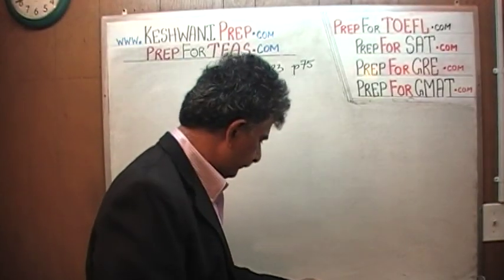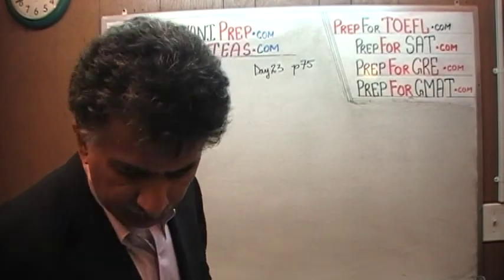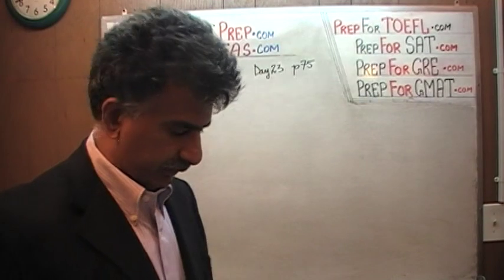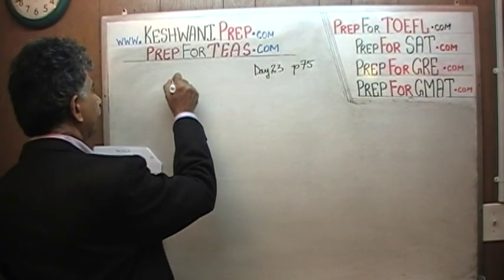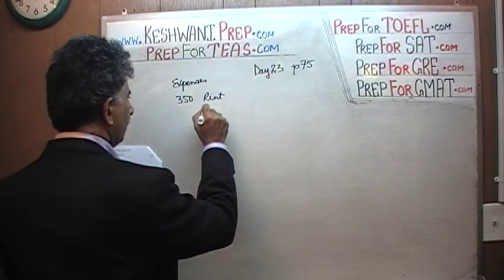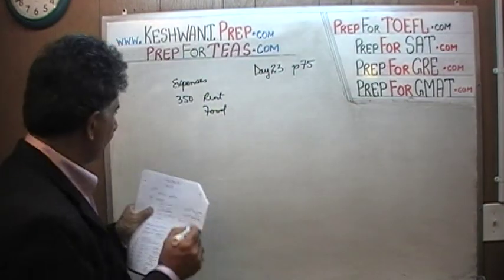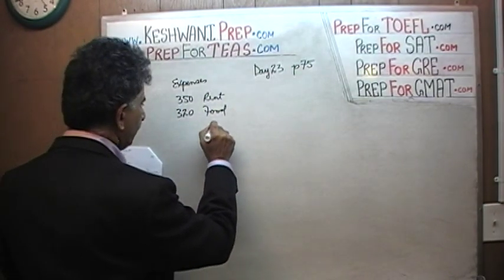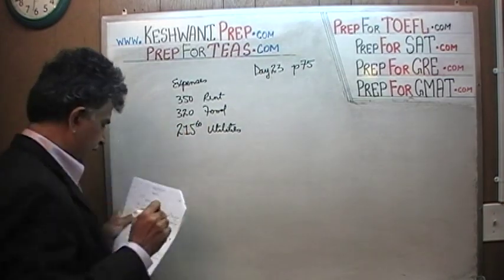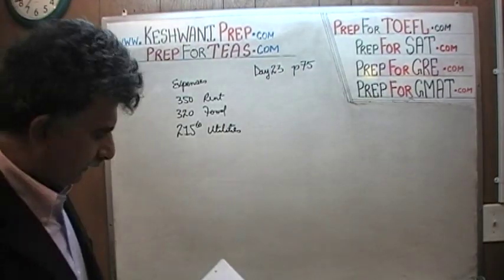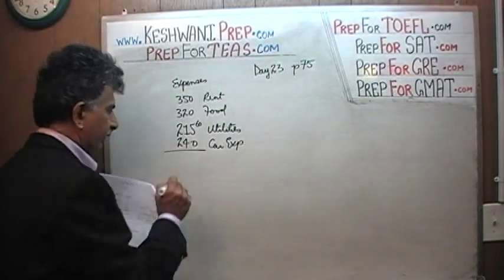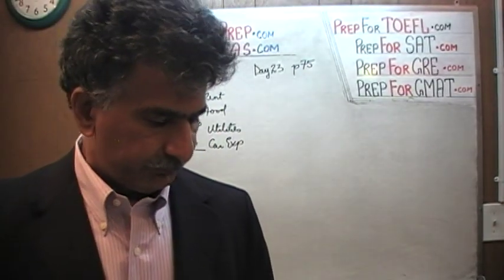Let's see what we have there. We have two practice problems. The first one deals with expenses and the remainder amount that the person would have from their take-home pay. The expenses are given to us as: rent, which we are told is $350; food — a nice round number — $320; utilities at $215.60; and the person has car expenses of $240, which covers car insurance, gas, perhaps the car payment, and so on.